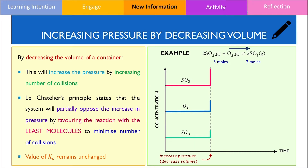Therefore, the concentration of SO₃ increases. In contrast, the concentrations of both SO₂ and O₂ will decrease since the forward reaction is being favoured. We need to pay attention to the molar ratios as this determines the magnitude of the change in concentration. Since SO₂ and SO₃ both have the exact same coefficient, the change in concentration should be identical, but SO₂ goes down as it is being consumed. However, the coefficient of oxygen is 1 whereas the coefficient of SO₂ is 2, so oxygen will go down by half the amount SO₂ went down by.